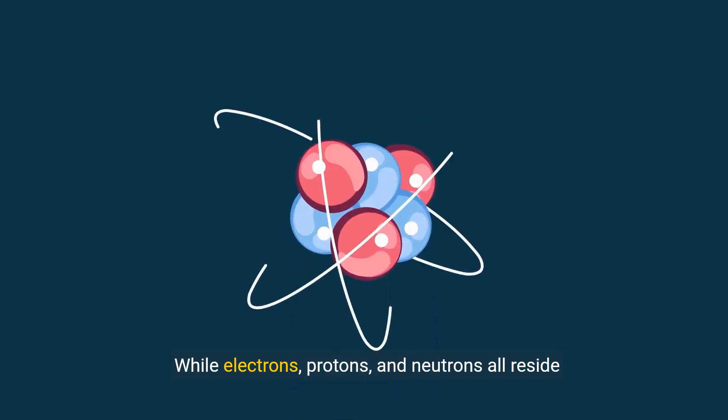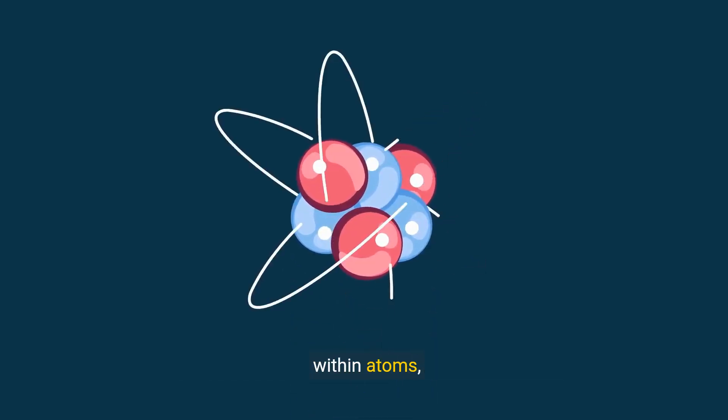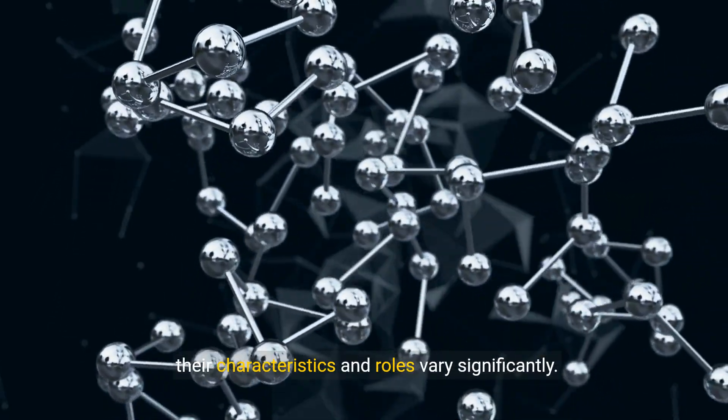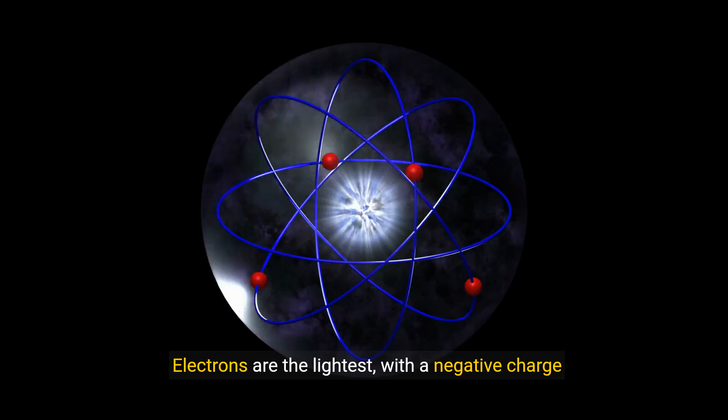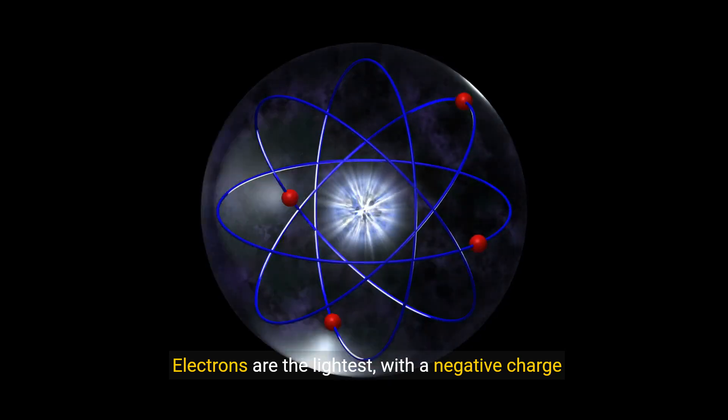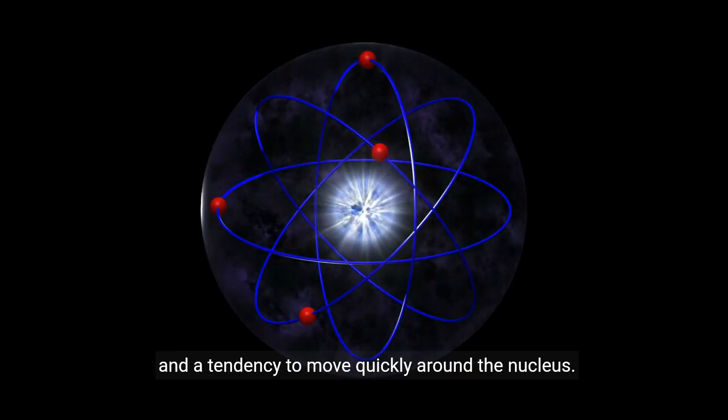While electrons, protons, and neutrons all reside within atoms, their characteristics and roles vary significantly. Electrons are the lightest, with a negative charge and a tendency to move quickly around the nucleus.